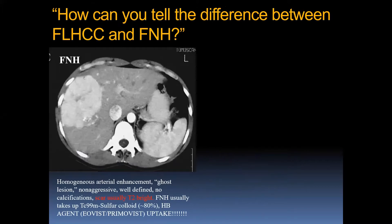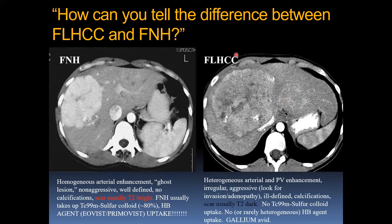Let's see an example of the differences between FNH and fibrolamellar HCC. FNH shows homogeneous arterial enhancement — sometimes called the 'ghost lesion' because on portal venous and delayed imaging you don't see it as well. It is non-aggressive and well-defined. The central scar is usually T2 bright. FNH also takes up sulfur colloid in about 80% of cases, and shows hepatobiliary agent uptake with Eovist or Primovist. Fibrolamellar HCC shows heterogeneous arterial and portal venous enhancement, irregular and aggressive features like invasion, adenopathy, and calcifications. The scar is usually T2 dark, with no sulfur colloid uptake and rarely heterogeneous hepatobiliary uptake. These are also gallium-avid.